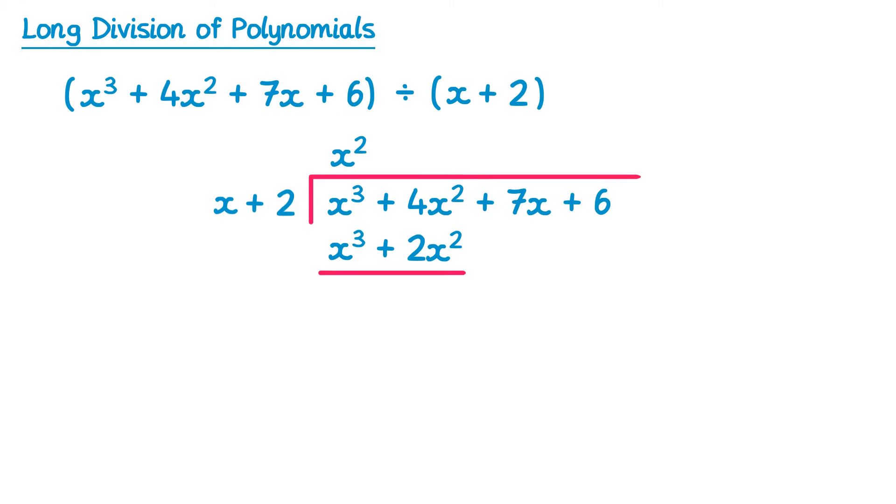We need to do x cubed plus 4x squared take away x cubed plus 2x squared. x cubed take away x cubed is nothing, and then 4x squared take away 2x squared is 2x squared. And then we bring down the next term, so that's the plus 7x here. And then we just repeat this process.